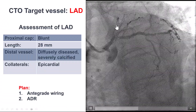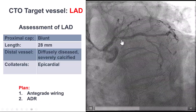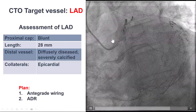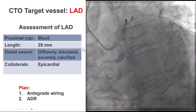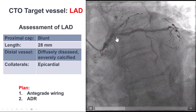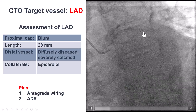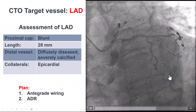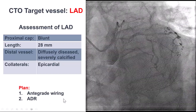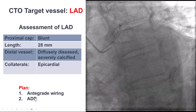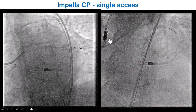Our initial plan was to PCI the ostial circumflex as well as the CTO of the LAD. We did not want to stent the circumflex before crossing the LAD CTO; otherwise, we would have the ostium of the LAD jailed by a stent. The LAD had a blunt proximal cap, heavy calcium, and diffuse disease. The occlusion length was 28 mm, and the LAD was filling through epicardial collaterals, so we did not have a good retrograde option. Our plan was to start with antegrade wiring and switch to ADR, with the caveat that re-entry would be very challenging due to significant calcification.